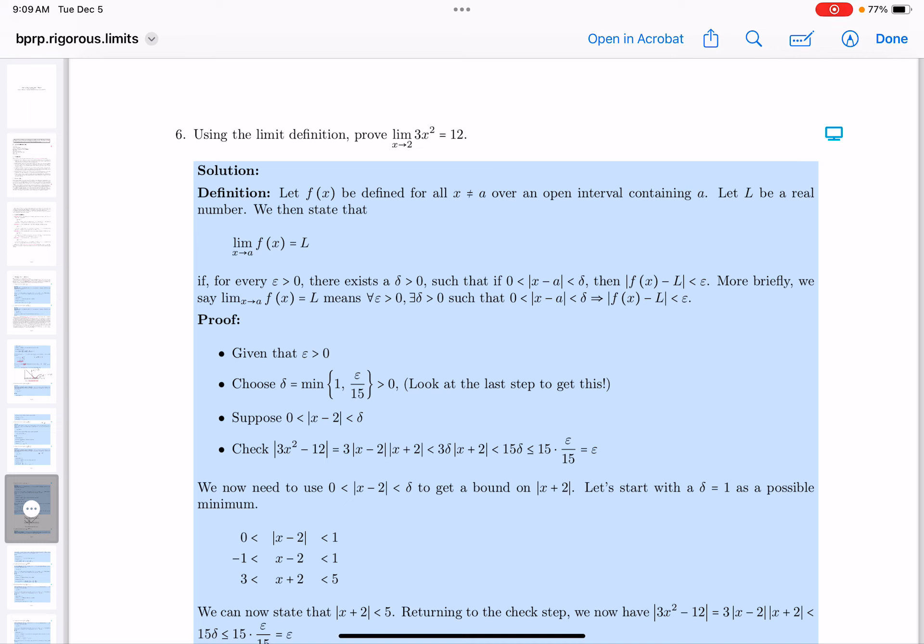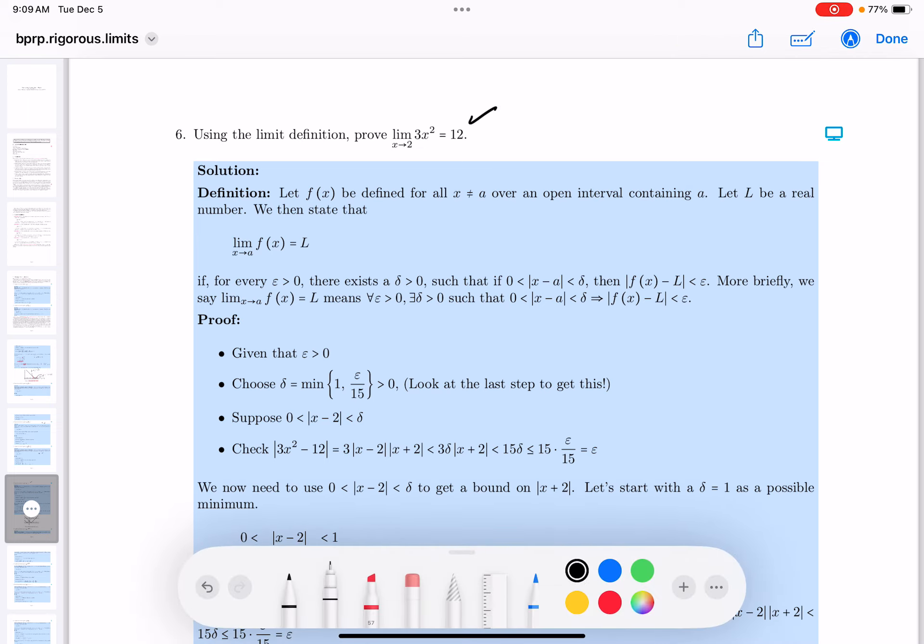Okay, number six, using the limit definition, prove that the limit as x goes to 2 of the function 3x squared is equal to 12.